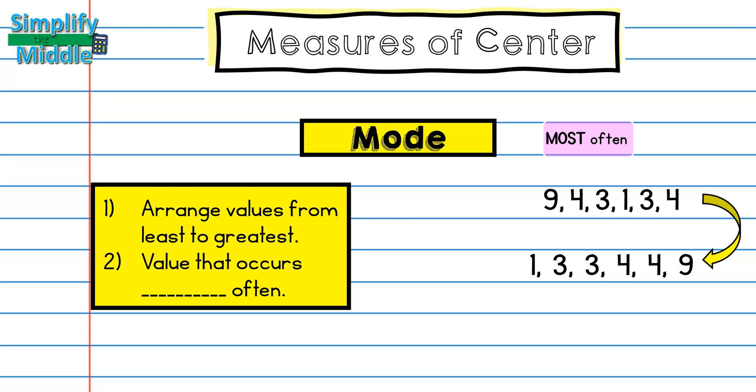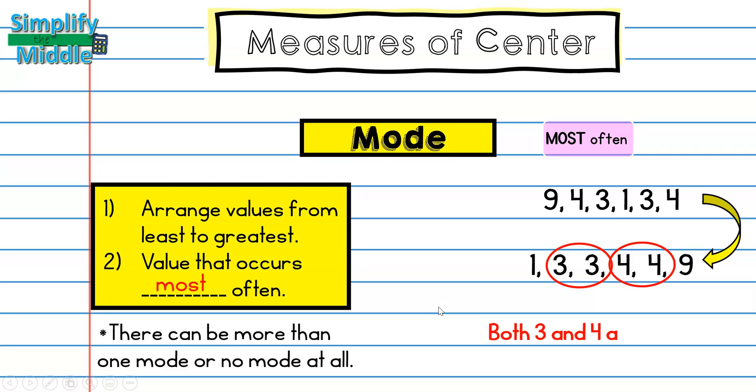And the value that occurs most often is going to be my mode. Well, here I see that there's actually two numbers that occur most often. And there can be more than one mode. Sometimes there is no mode at all. So when there's no mode, I just say no mode. In this case, there is more than one mode. So I have both 3 and 4. This is called bimodal, whenever there are two modes.